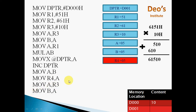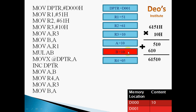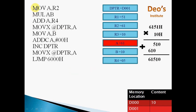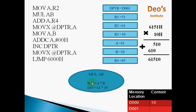Next, MOV A, R3 — we again take the value 10 from R3 into A register. Then MOV B, A — from A, take it into B register, so B register now contains 10. Now we perform 61 multiplied by 10. Next instruction MOV A, R2 — R2 contains 61H, so 61 is taken into the accumulator. Again MUL AB — like before, 61 multiplied by 10 gives 610.